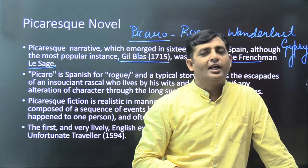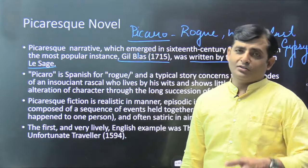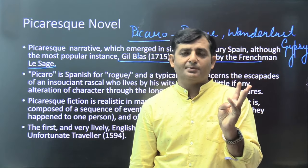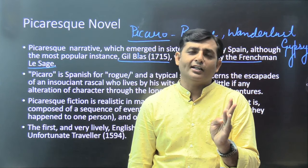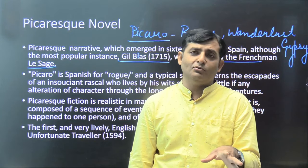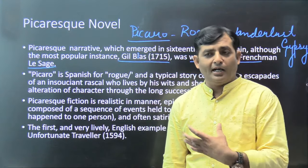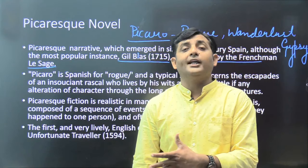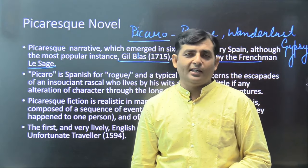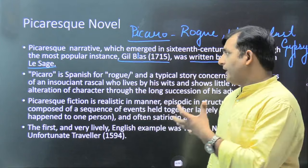Tobias Smollett translated the French picaresque novel into English and then wrote several picaresque novels such as 'Adventures of Roderick Random.' The four wheels of the English novel are: Samuel Richardson (first), Henry Fielding (second), Tobias Smollett (third), and Laurence Sterne (fourth). Henry Fielding is called the father of the English novel. He parodied Richardson's 'Pamela' in his novel 'Shamela,' then wrote 'Joseph Andrews' and 'Tom Jones.'